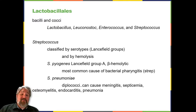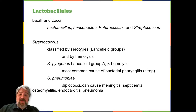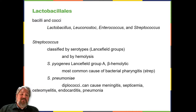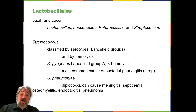Streptococcus pneumoniae, commonly referred to as pneumococcus, is a Streptococcus species that also does not belong to any Lancefield group. S. pneumoniae cells appear microscopically as diplococci — pairs of cells — rather than the long chains typical of most Streptococci. S. pneumoniae causes pneumonia and other respiratory infections, but can also cause meningitis, septicemia, osteomyelitis, and endocarditis, especially in newborns, the elderly, and patients with immunodeficiency.